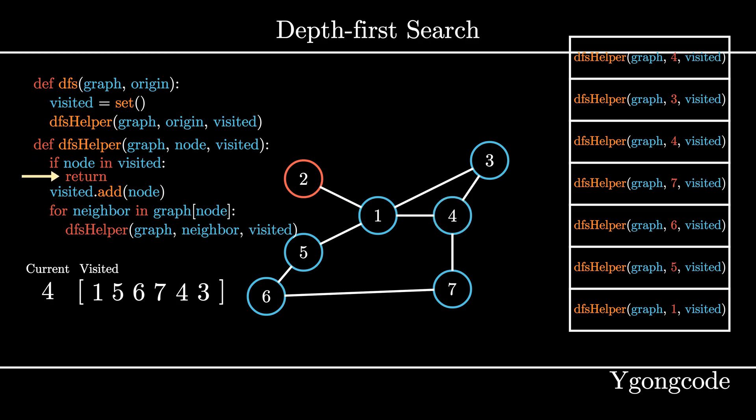Now, we will see a chain reaction of the call stack clearing out because the node in each call in the call stack was the last neighbor in its respective for loop.